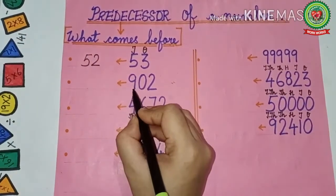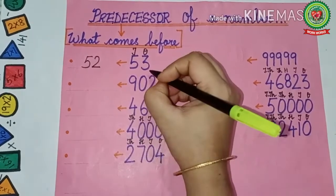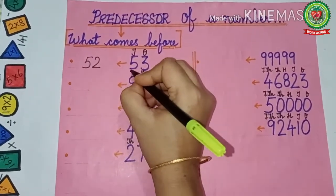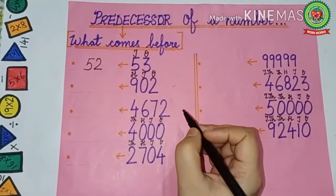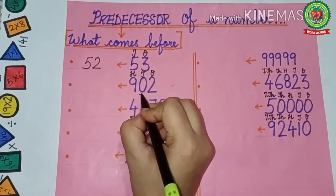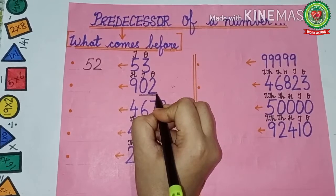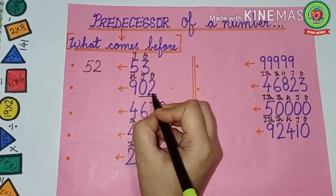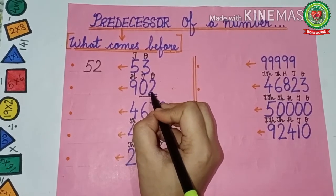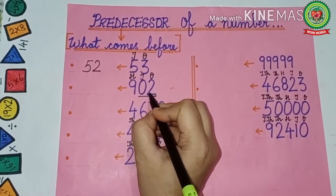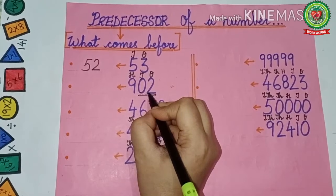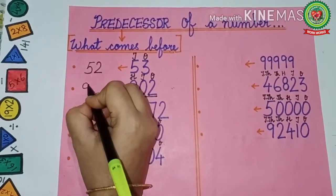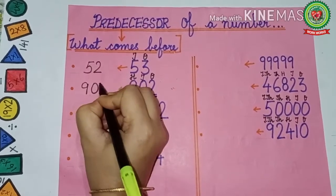See the next number: 902. Again, write the place values — ones, tens, hundreds. We will take the ones and tens together. 02 is there. Since 0 is there, 0 will remain the same. We have to see what comes before 2. What comes before 2? That is 1. So, the hundreds place will remain the same — that is 9, making 901.